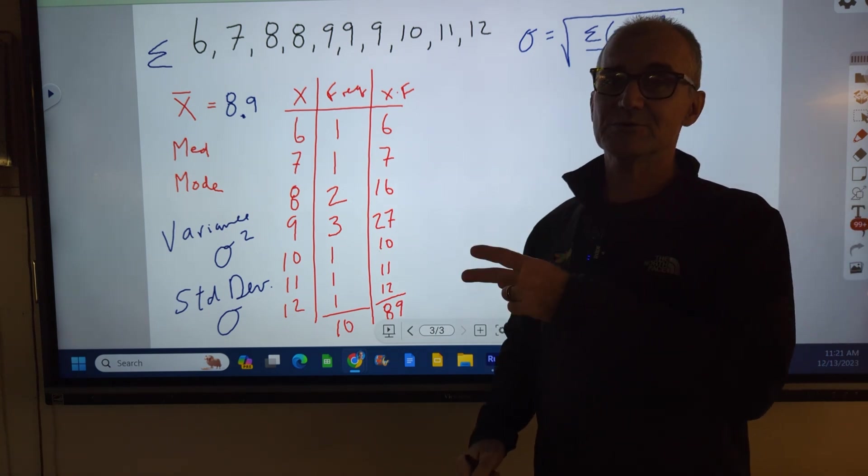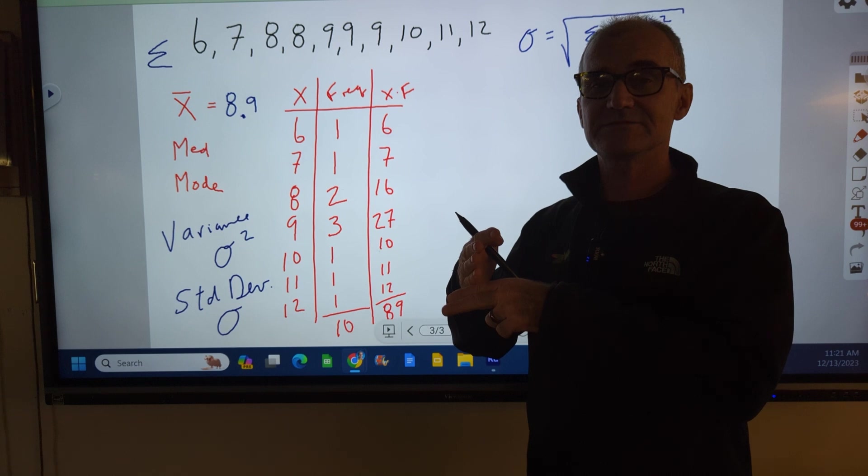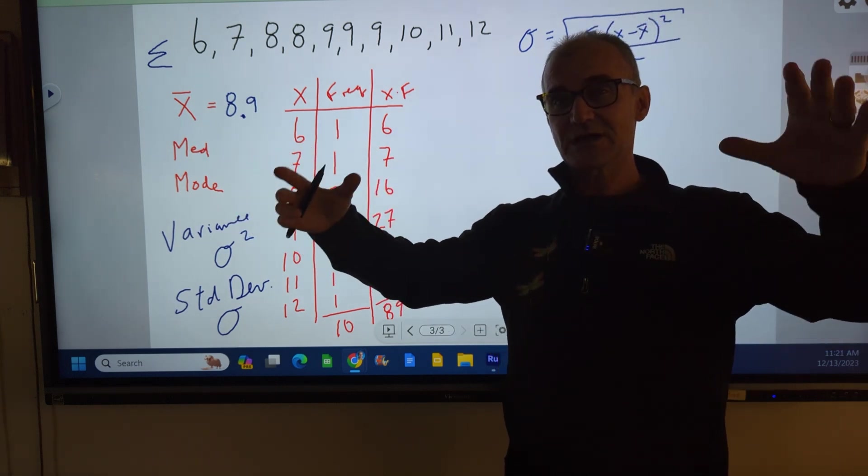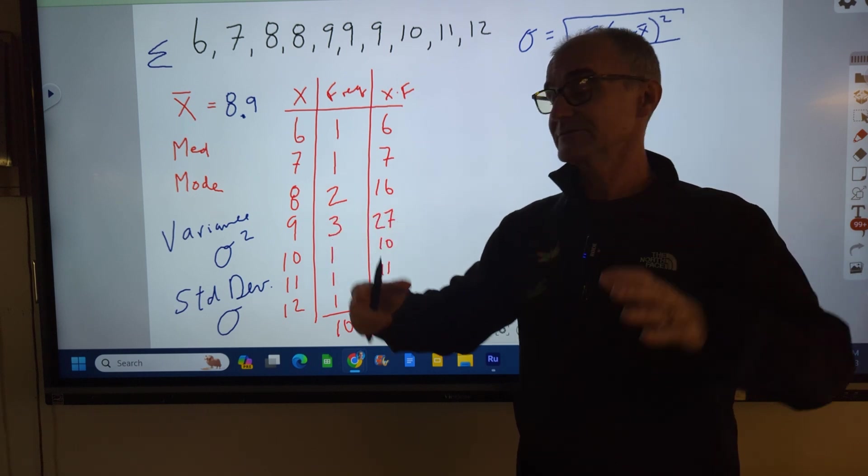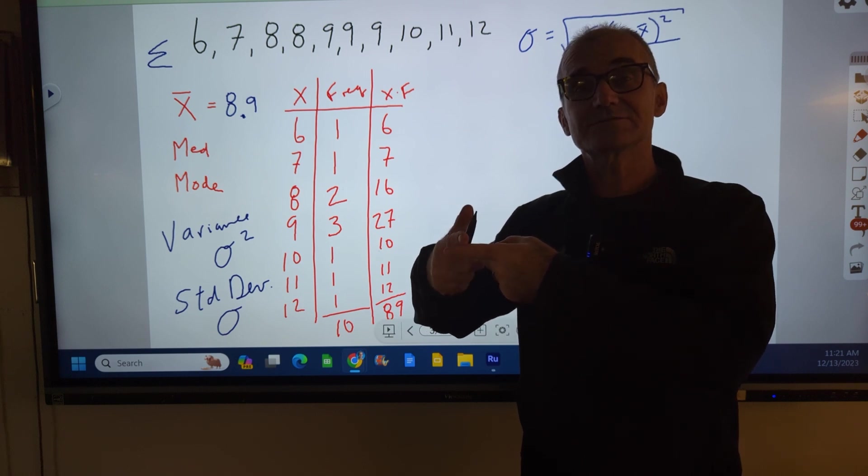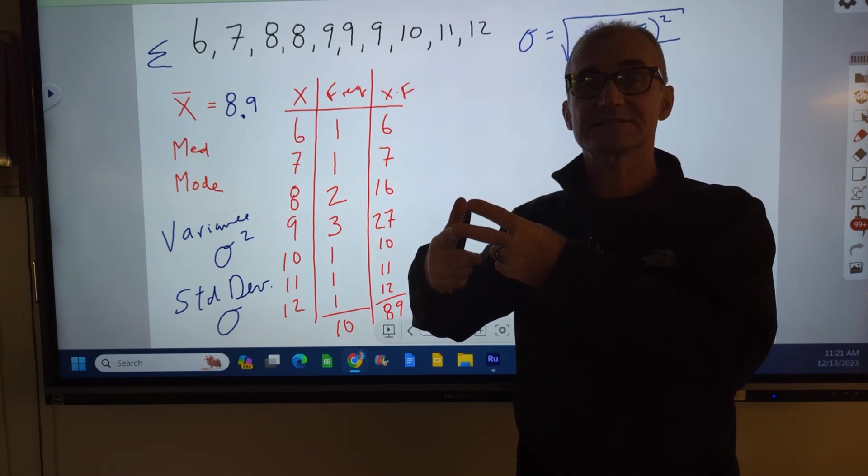The two most important numbers are always average and standard deviation. Standard deviation is measuring how tightly grouped the set is. Two things to be a good golfer: you've got to have a good score, a good average score. But more importantly, it's your consistency.